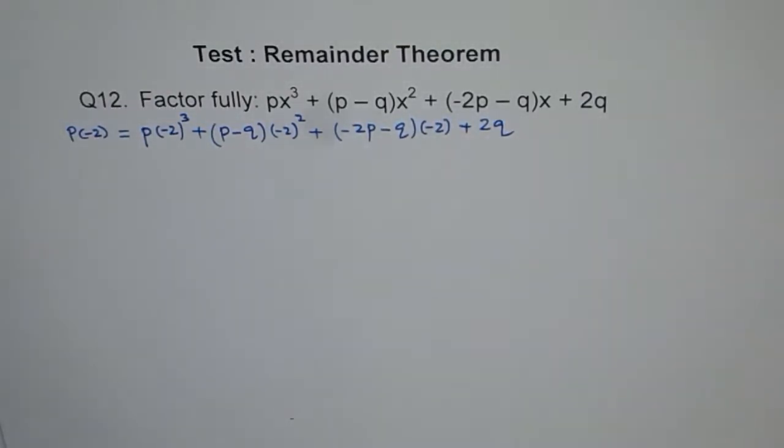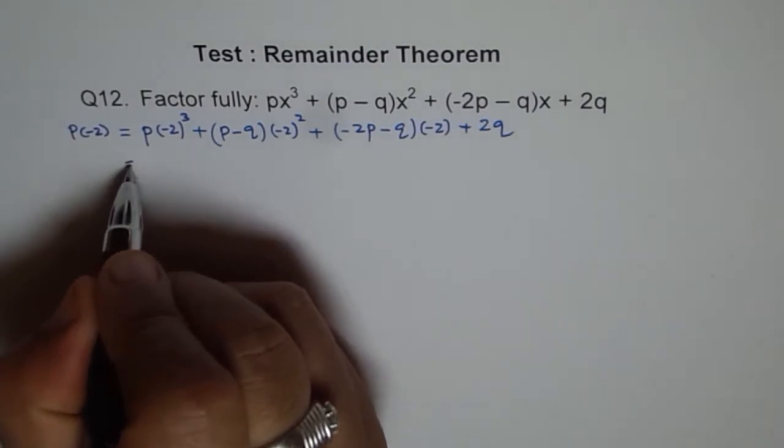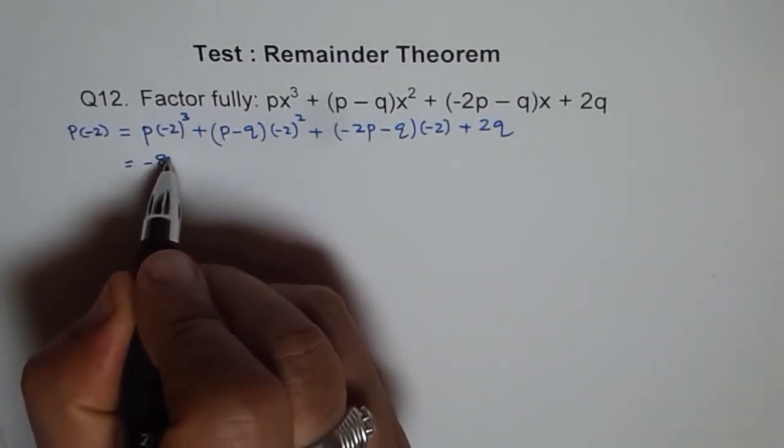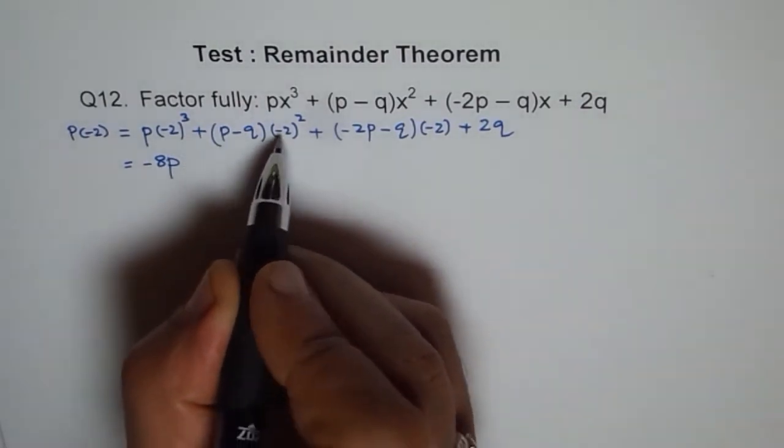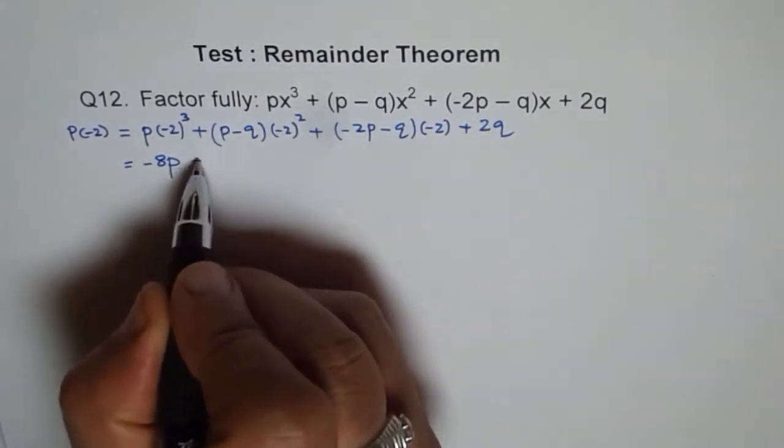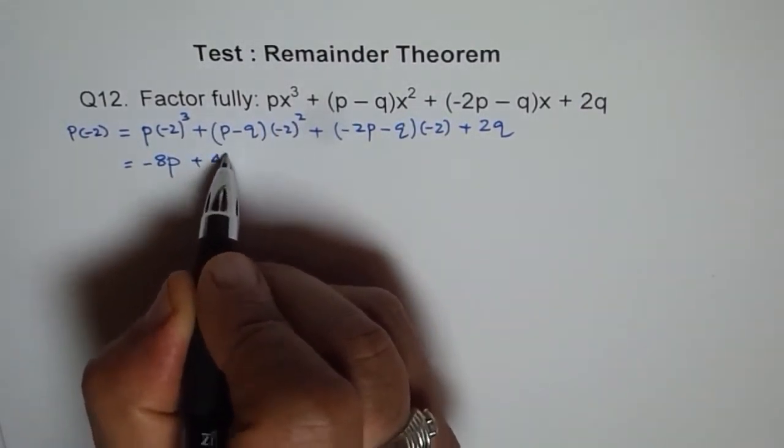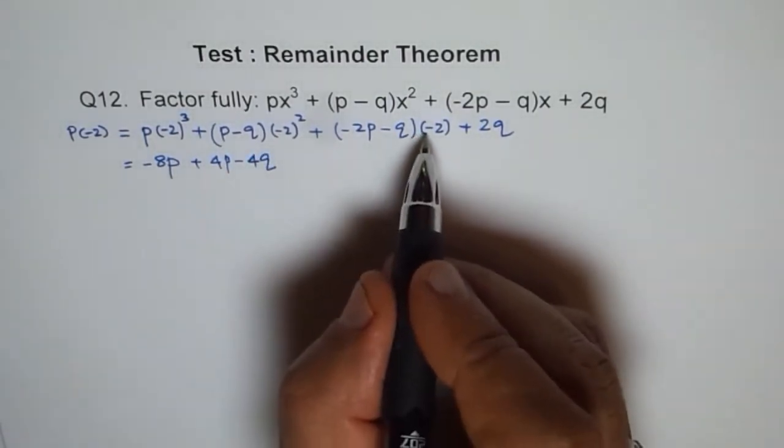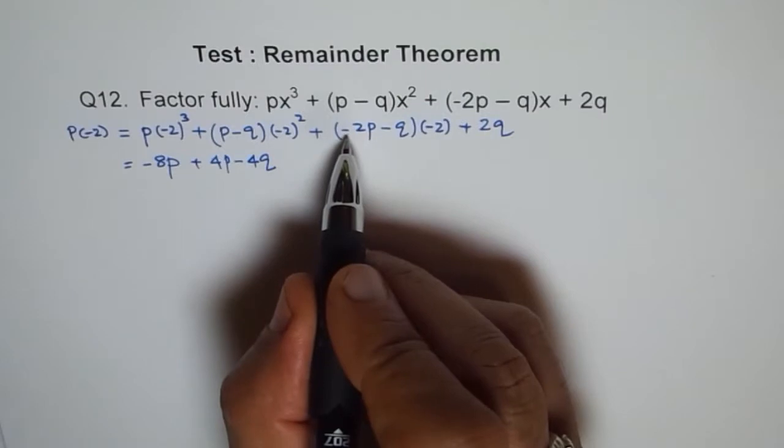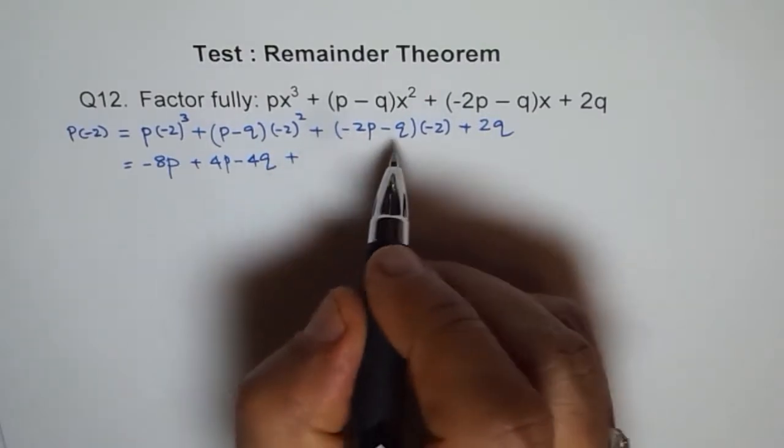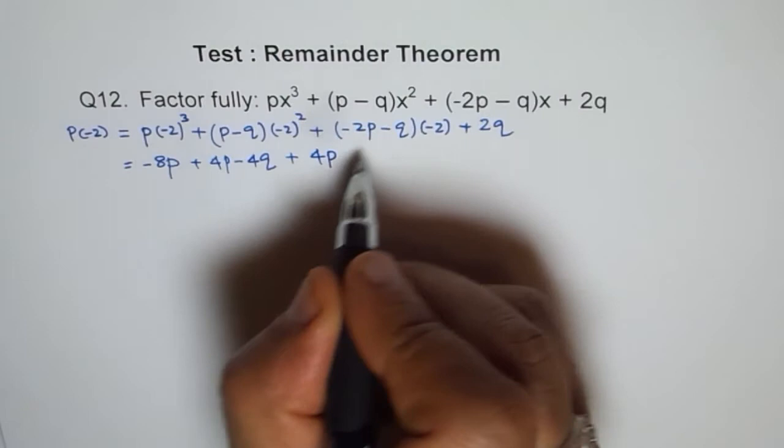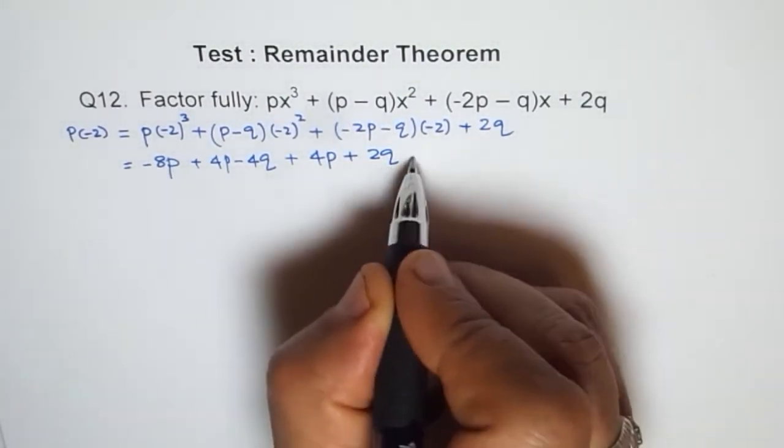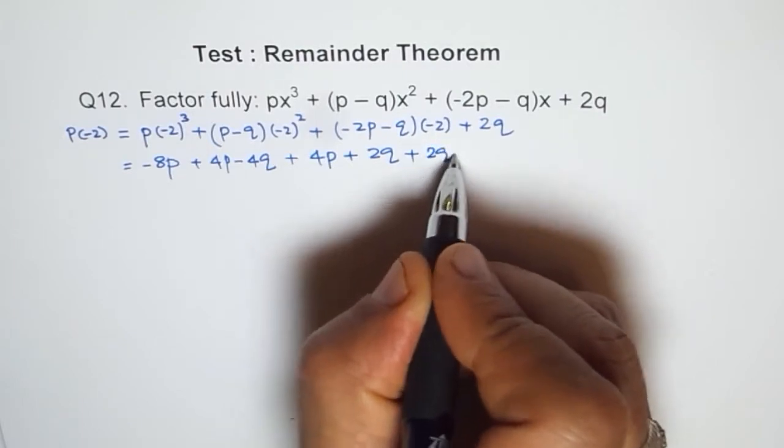We replaced x with minus 2, and minus 2 cubed is minus 8, so minus 8p. And minus 2 squared is 4, so I will multiply these with 4: 4p minus 4q. Minus 2 with minus will give me plus, so I get plus 4p plus 2q, and plus 2q.